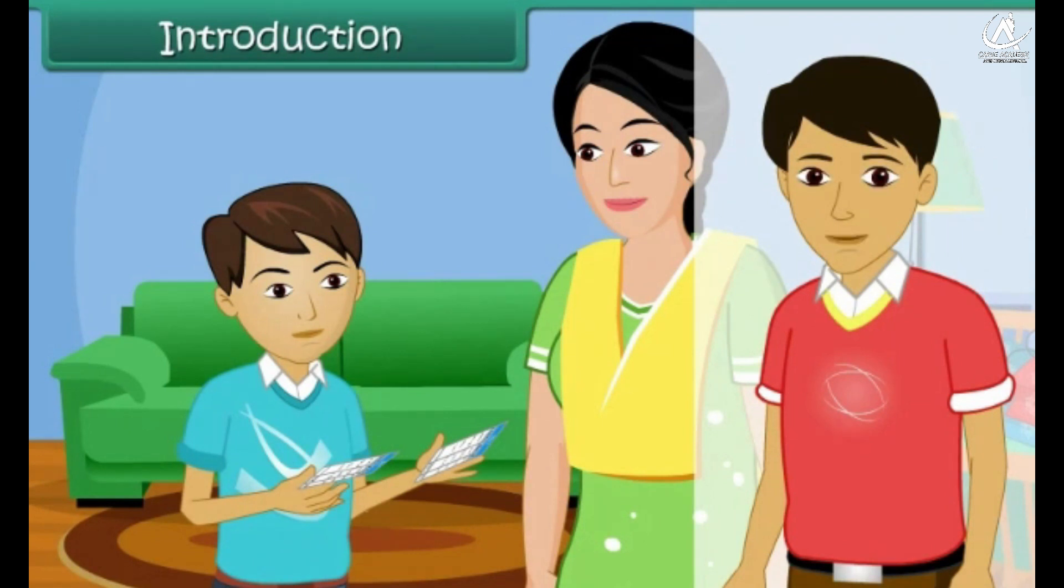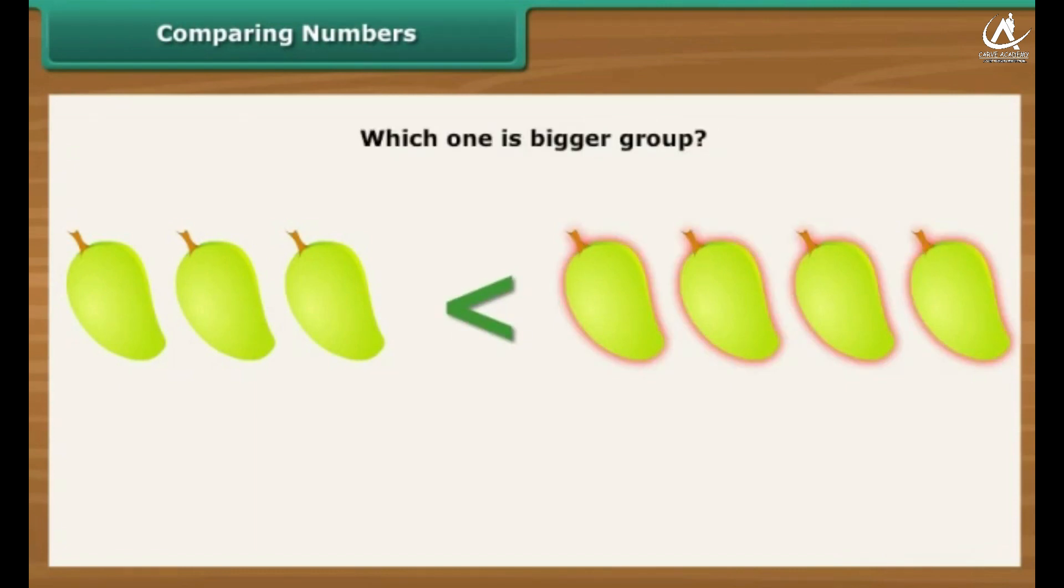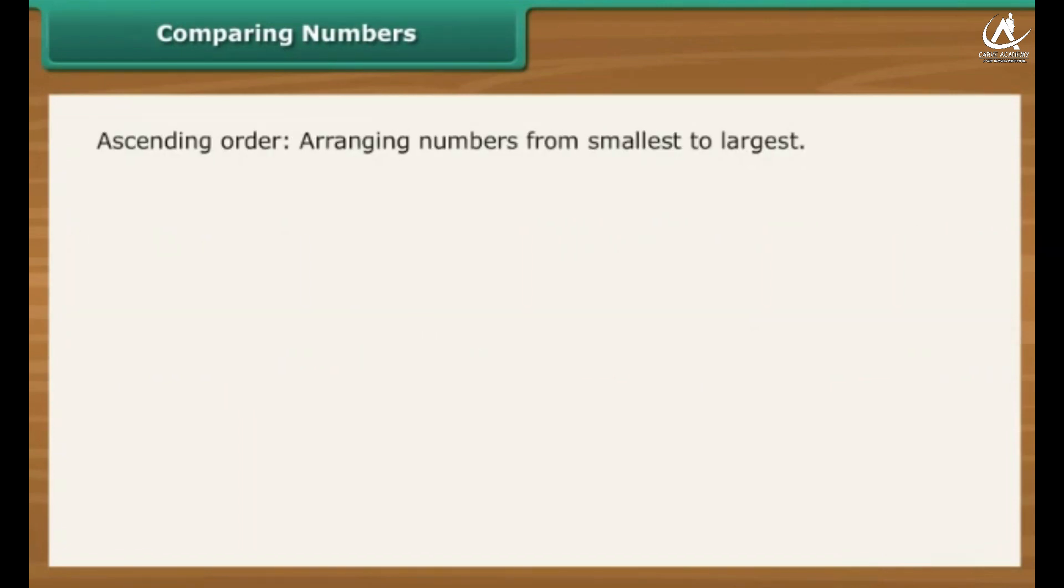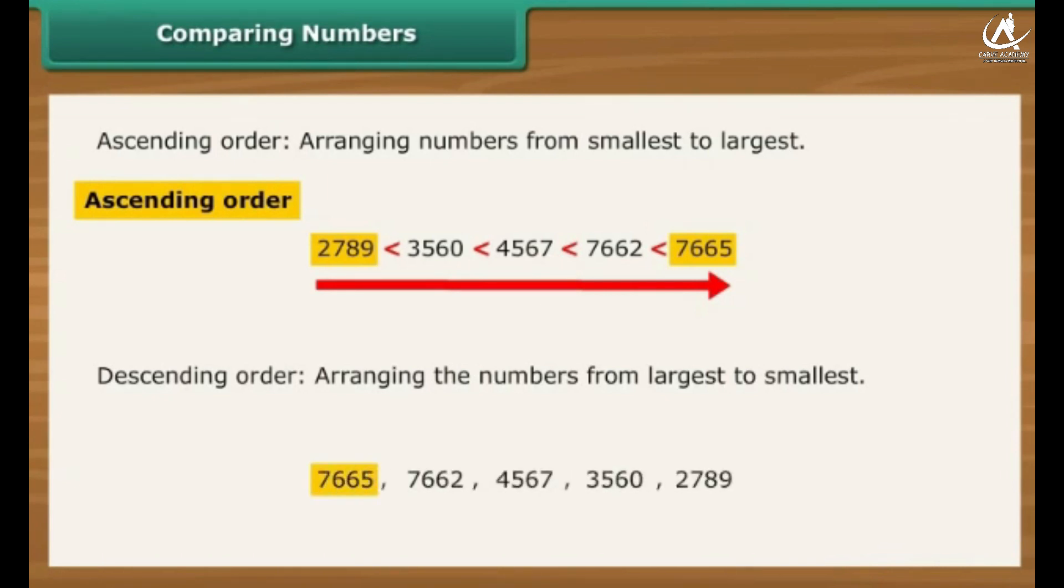Come, we too will learn about numbers. Comparing numbers. A collection or group of numbers can be compared with each other. On comparing the numbers, we can tell which group is large. The arrangement of numbers from the smallest to the largest is called ascending order. The arrangement of numbers from the largest to the smallest is called descending order.